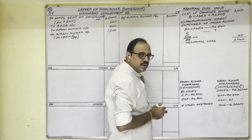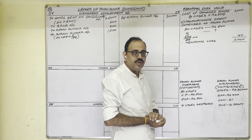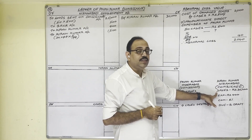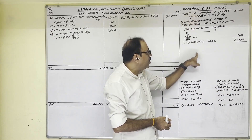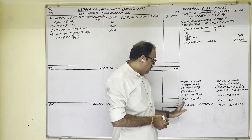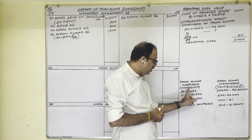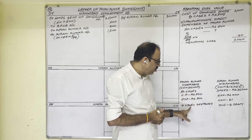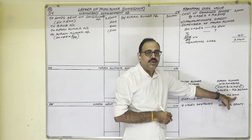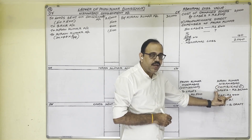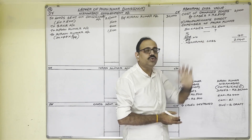The consignee's expenditure of 400 rupees we should not add when calculating abnormal loss value. When proper information is not given about the consignee's expenditure, we treat it as indirect expenditure. The reason is: these four cases were damaged in transportation, meaning the consignee received only 46 cases and spent 400 rupees on those 46 cases only. Since the consignee didn't spend anything on the damaged cases, we do not include consignee's expenditure in the abnormal loss value. So the abnormal loss value is 2,040 rupees.